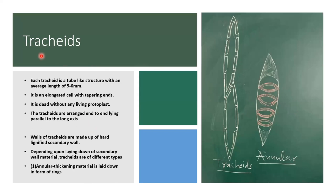First we will discuss about the structure of tracheids. Tracheids are pointed and tapered at both ends. Their length is about five to six mm. In young condition they will have a protoplast, cell organelles and nucleus, but at maturity the nucleus will not be found. Cell organelles will get degenerated and cytoplasm will also disappear. So at maturity tracheids will become dead — without any protoplast or nucleus. They are placed one upon each other and water and minerals pass through them via connecting membranes.